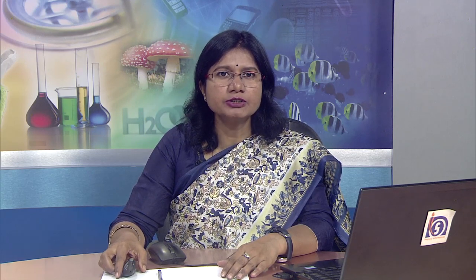Let us understand the working of the NOT gate. Basically a NOT gate performs an inverse operation. It has one input and one output, and the output is NOT of A, which means the complement of the input. The boolean expression for the NOT gate is expressed as Y equals A bar or A complement, which means whatever input we provide, the output is going to be the inverse of that.